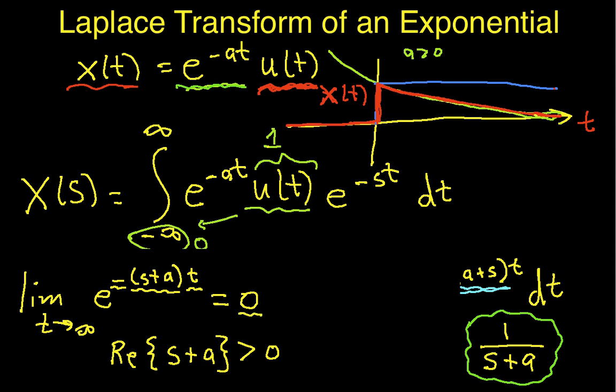So, you'll remember that s has a real part of sigma and an imaginary part of j omega. So, in order for this to be true, I need sigma plus a to be greater than 0, or sigma has to be greater than negative a. This defines the region of convergence.